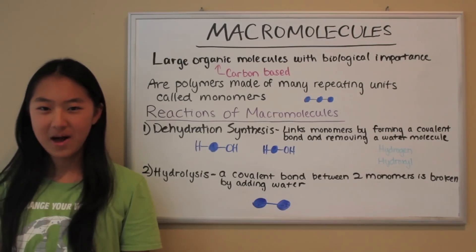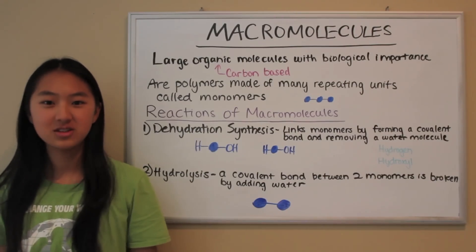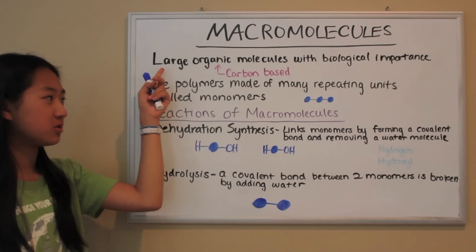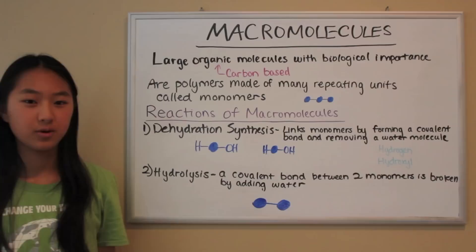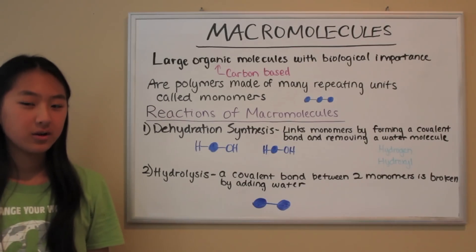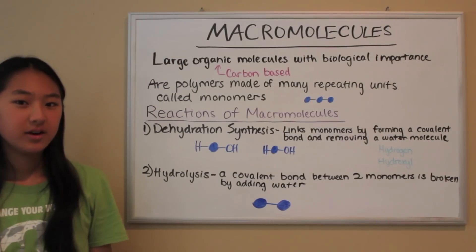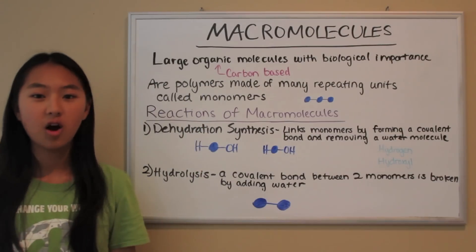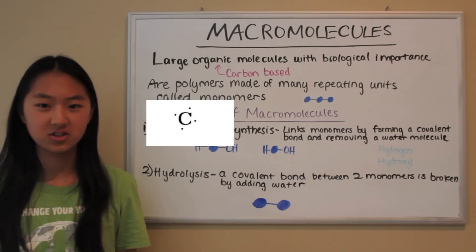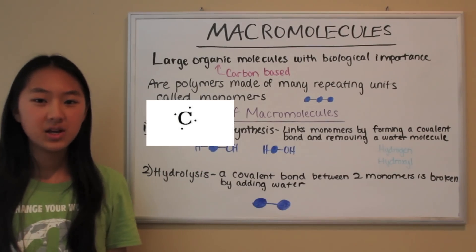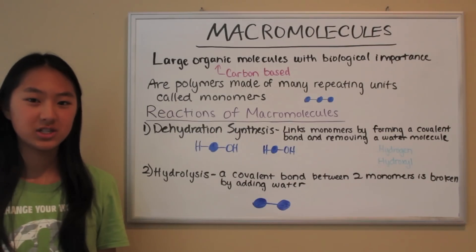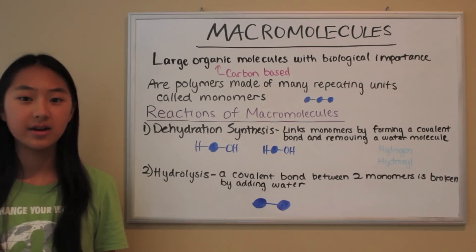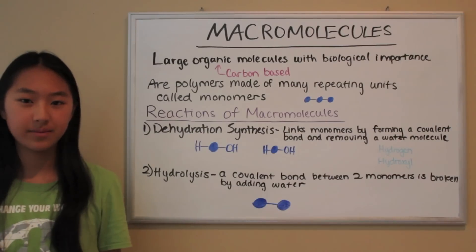Macromolecules. What are macromolecules? Macromolecules are large organic molecules with biological importance. What makes a molecule organic? It's when the molecule is carbon-based. Carbon is an element with four valence electrons, meaning there are four electrons in its outer shell. Carbon likes to bond with other atoms using covalent bonds.